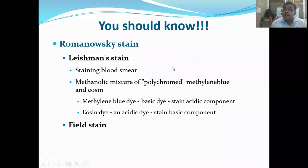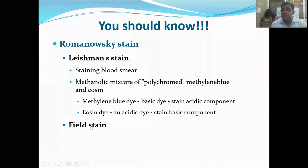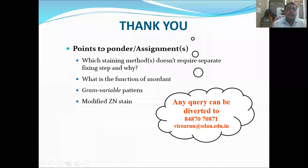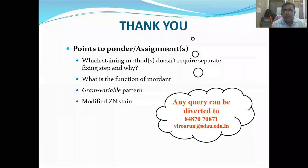These are the important staining methods you will encounter during your microbiology class. Additionally, you may come across Leishman stain and Field stain, which are classified under simple staining and are routinely used to stain blood to observe hemoprotozoa — their principle will be covered in pathology class. Before concluding, there are assignment questions: which staining method does not require a separate fixing step? What do you understand by mordant, Gram variable pattern, and modified ZN stain? Thank you everyone for listening.